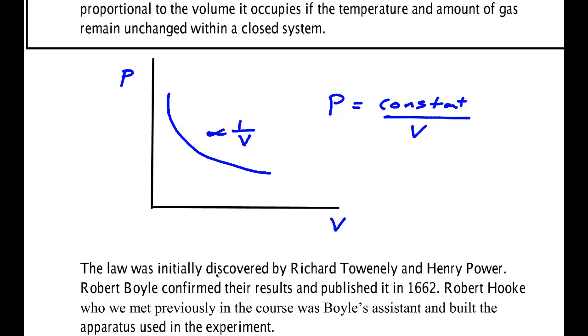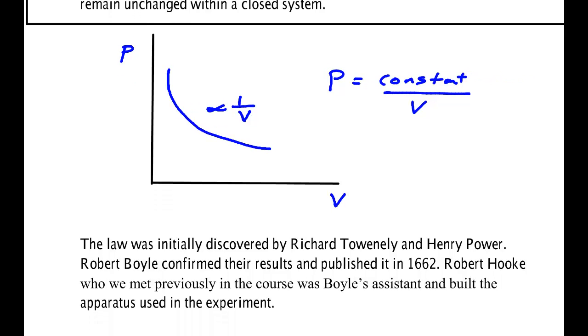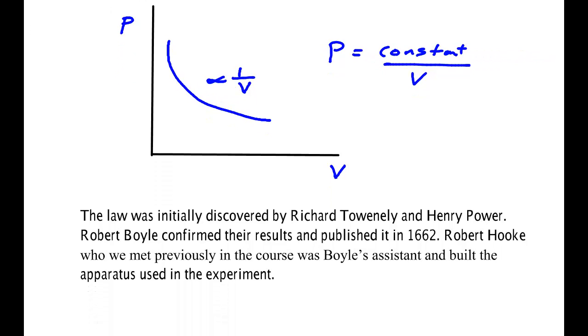The law was initially discovered by Richard Towneley and Henry Power. But Robert Boyle confirmed their results and actually published it in 1662. Robert Hooke that we met earlier about Hooke's law was an assistant of Boyle's and it was said that he actually built the apparatus by which these experimental results were obtained. So if you keep the temperature the same and keep the number of atoms the same the pressure times the volume of gas was experimentally found to be unchanged.